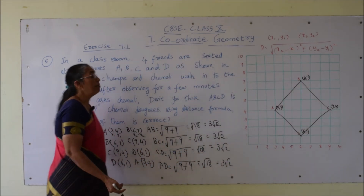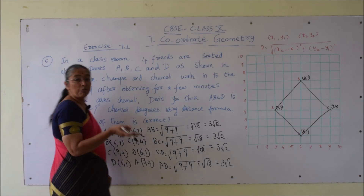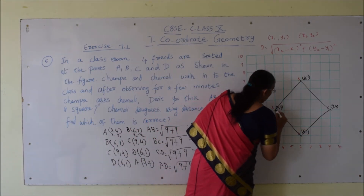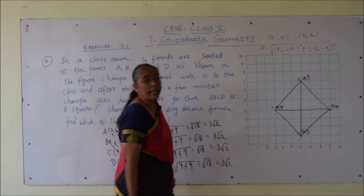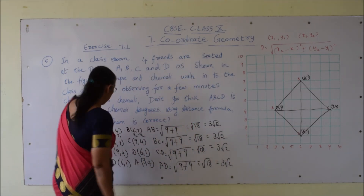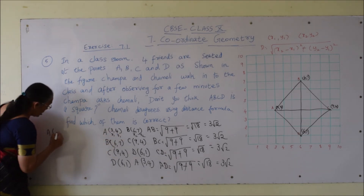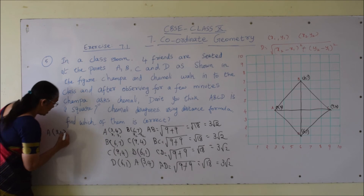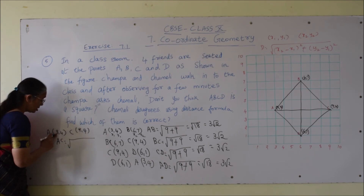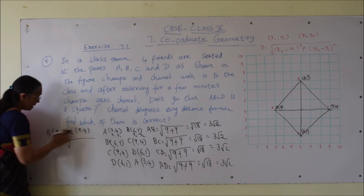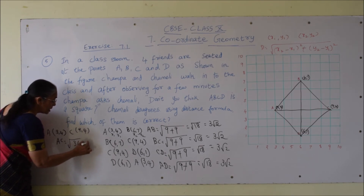All 4 sides are equal, but we cannot decide whether they are forming a square or a rhombus yet. So to check, we have to find the distance between diagonals AC and BD. If the diagonals are of equal length, they will form a square. Diagonal AC: A is (3, 4) and C is (9, 4). AC = root over (9 − 3)² + (4 − 4)² = root over 36 + 0 = √36 = 6.